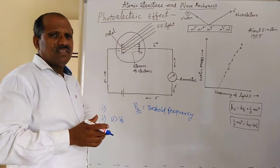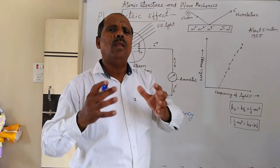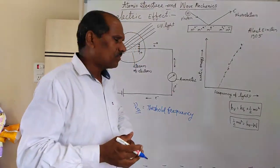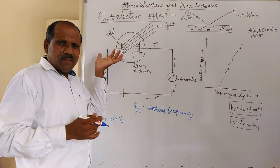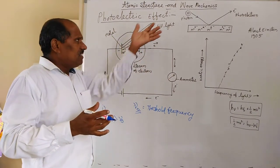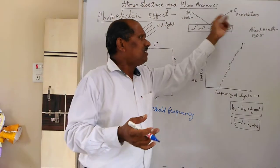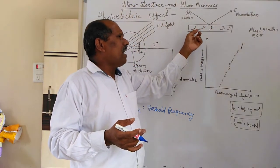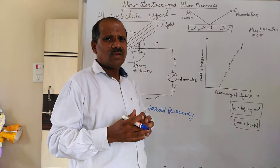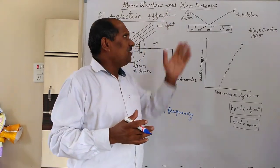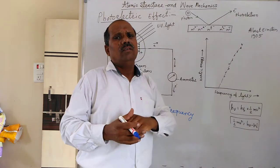The photoelectric effect was explained in detail by Albert Einstein in 1905, and he received the Nobel Prize for it. As per his explanation, whenever photons having a sufficiently high frequency are incident on the metal surface, electrons are ejected. The metal possesses positive ions with electrons, and when a photon is incident, it gives energy to the electrons and they are knocked from the metal surface.